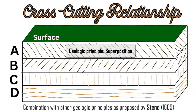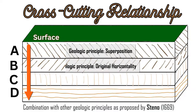The first one, superposition, relates to the idea that the closest layer to the surface is the youngest, and as you go deeper, the age of the rock increases. So A will be the youngest, B the next youngest, C older, and D the oldest in this diagram.